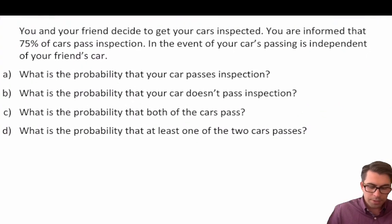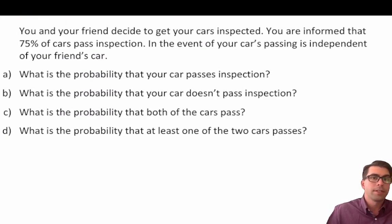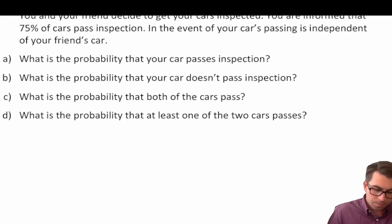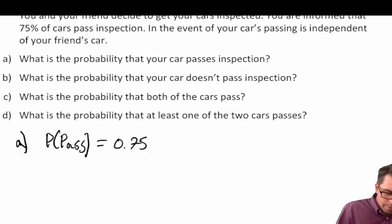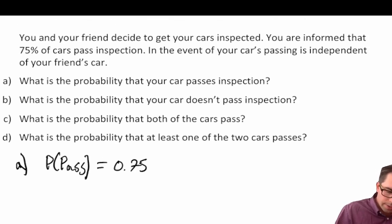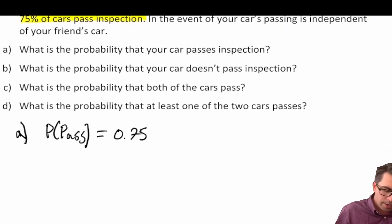Let's do a practice problem. You and your friend decide to get your cars inspected, and you're informed that 75% of cars pass inspection. The event of your car passing is independent of your friend's car passing. What is the probability that your car passes inspection? We label this A — the probability of a pass — which is given to us as 0.75, since 75% of cars pass inspection.